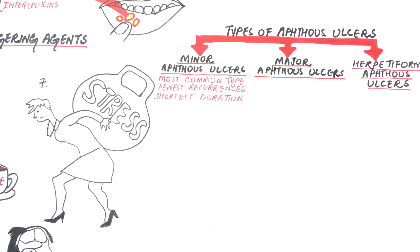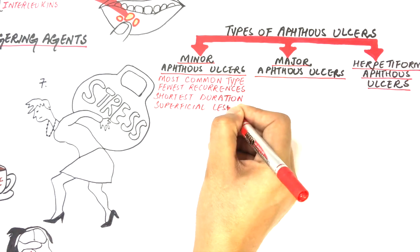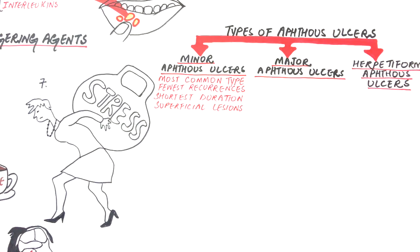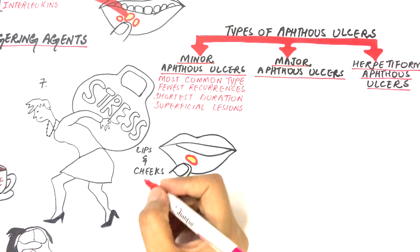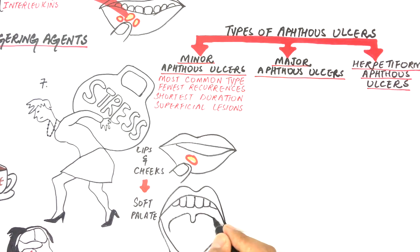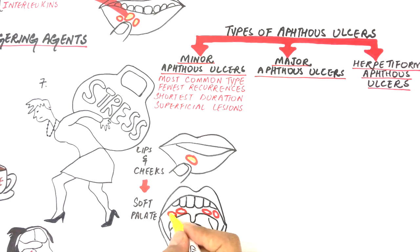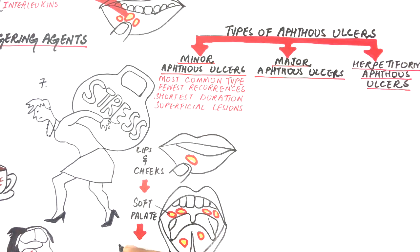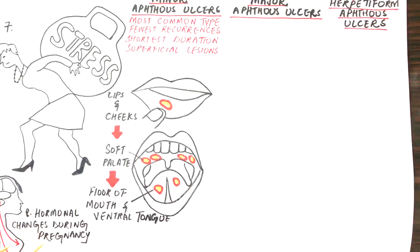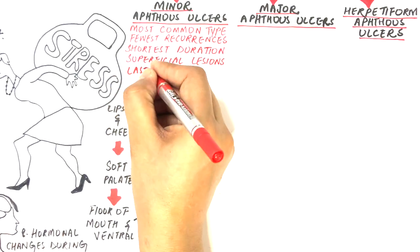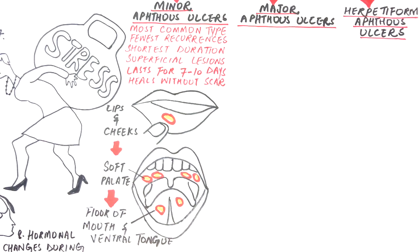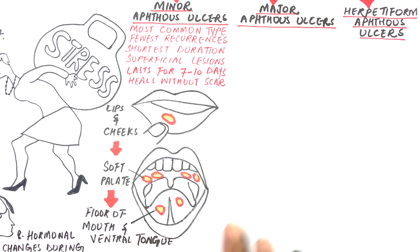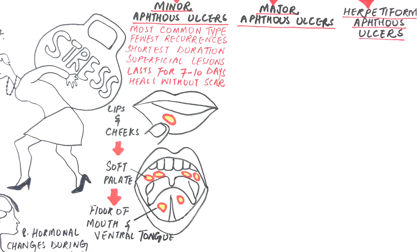Minor aphthous ulcerations are superficial lesions and appear on the non-keratinized mucosa of the lips and cheeks, followed by the mucosa of the soft palate, the floor of the mouth, and the ventral surface of the tongue. The ulcers are usually less than a centimeter in size and last for about 7 to 10 days, then heal up without scarring.